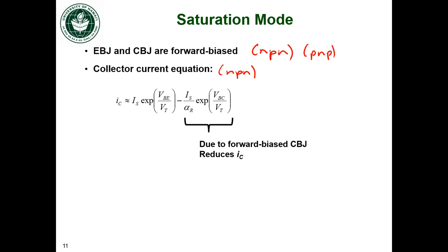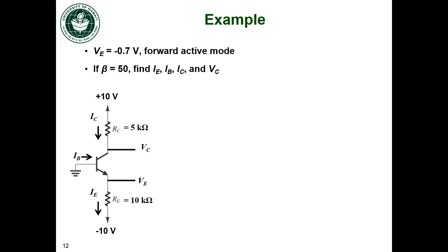Let's look at an example of transistor operation. So we're given this BJT circuit. The emitter voltage is going to be negative 0.7 volts and we know that it's going to be in forward active mode. If the common emitter current gain parameter beta is 50, then let's find out what all the terminal currents are and what the voltage is at the collector.